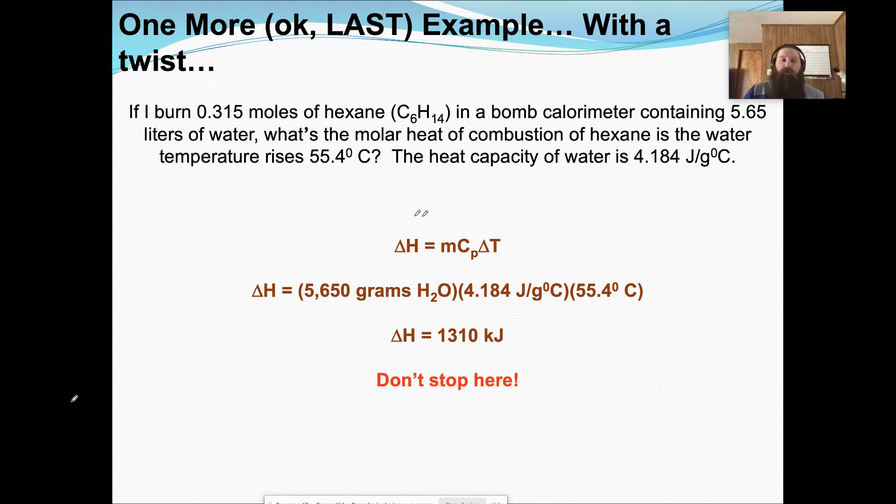So we start with delta H equals MC delta T. Remember that delta H and Q can be used pretty much interchangeably here, and delta H is enthalpy, and we'll talk more about enthalpy in the coming couple of lessons. And so we plug it in, and we get delta H is 1310 kilojoules.